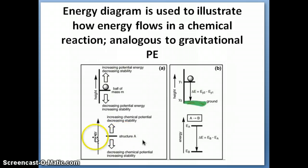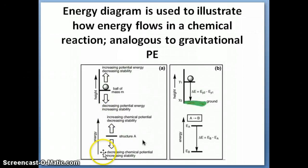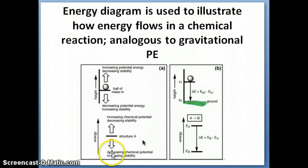We use that same convention to talk about the stability of a molecule. The higher the energy of the molecule — the further it is from the bottom of the energy axis — the less stable the molecule is. And the lower the energy of the molecule, the more stable the molecule is.